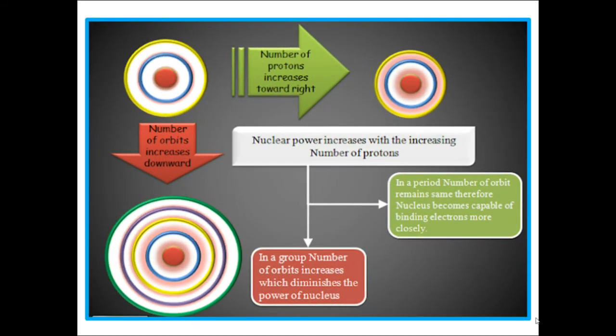Observe this diagram. We understand that from moving left to right, size decreases. From moving top to bottom, size increases. Left to right, nuclear charge and valence electrons increase. More attraction develops between the nucleus and the valence shell. Top to bottom, shells increase, size increases. Number of protons increases towards right, number of orbits increases towards down. Nuclear power increases while the number of protons increases.